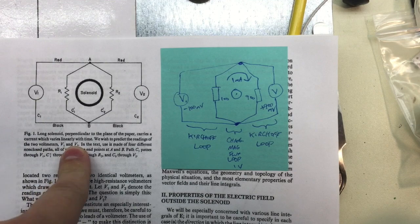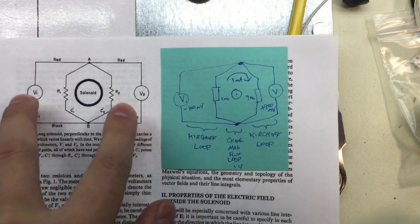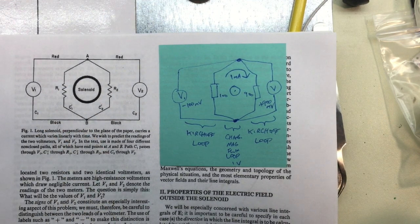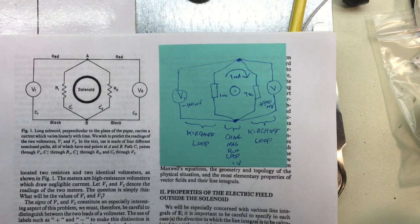And, spoiler alert, we're going to discover that these two voltmeters, which are connected to the exact same two points in the circuit, A and B, are going to give us different readings. And in just a minute, you're going to understand why and be able to explain it.